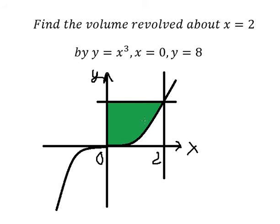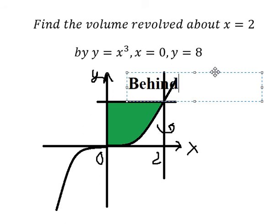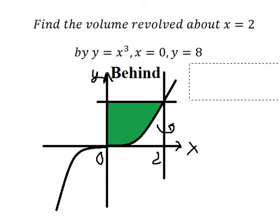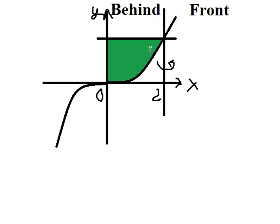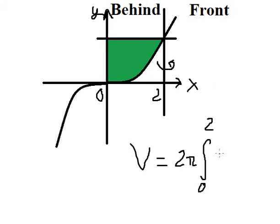We want this area revolved about x equals 2. We can see that this area is behind x equals 2 — this part is the front, and this part is behind. So because the area is behind x equals 2, we will have the formula: v equals 2π, with the integral from 0 to 2, and we put 2 minus x.